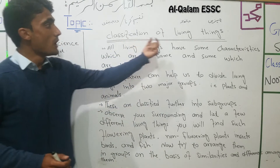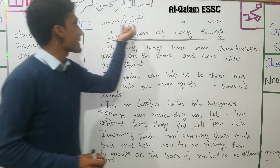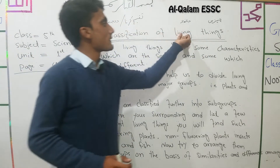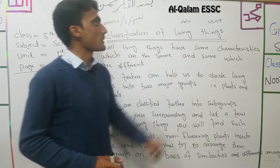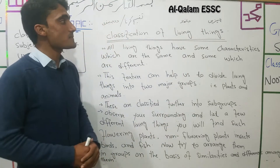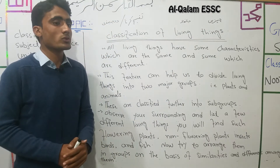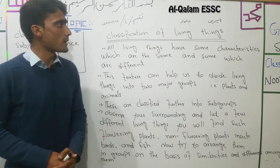We are going to discuss the classification of living things. Classification is about living things. Living means a human being or organism, and things means an object or creature.